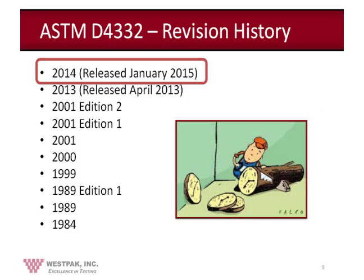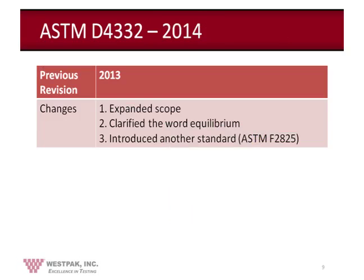As you can see by the revision history list, ASTM D4332 has been around for quite some time with multiple revisions. The latest revision is 2014, released in January 2015. The ASTM committee worked on it in 2014 but didn't approve or release it until 2015. The main changes from 2013 to 2014 include an expanded scope, clarification of the word 'equilibrium,' and the introduction of another standard, ASTM F2825.